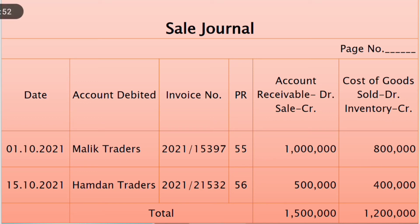Here is a sales journal for your consideration. It includes a page number of the book, a column of date, a column of account debited, a column of invoice number, post reference, account receivable debit and sales credit, and a column of cost of goods sold debit and inventory credit.